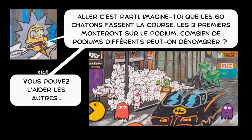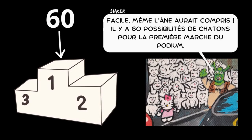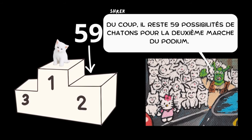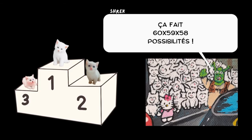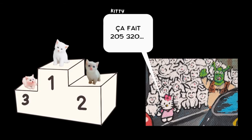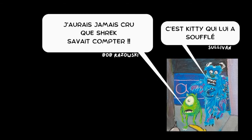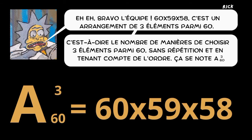Imagine that all 60 kids are racing and the first three will be on the podium. How many different podiums can we count? You guys can help them — easy! There are 60 possibilities for the top step of the podium. As a result, there are 59 possibilities left for the second step, and 58 possibilities left for the third step. That makes 60 times 59 times 58 possibilities — that's 205,320. Well done team!